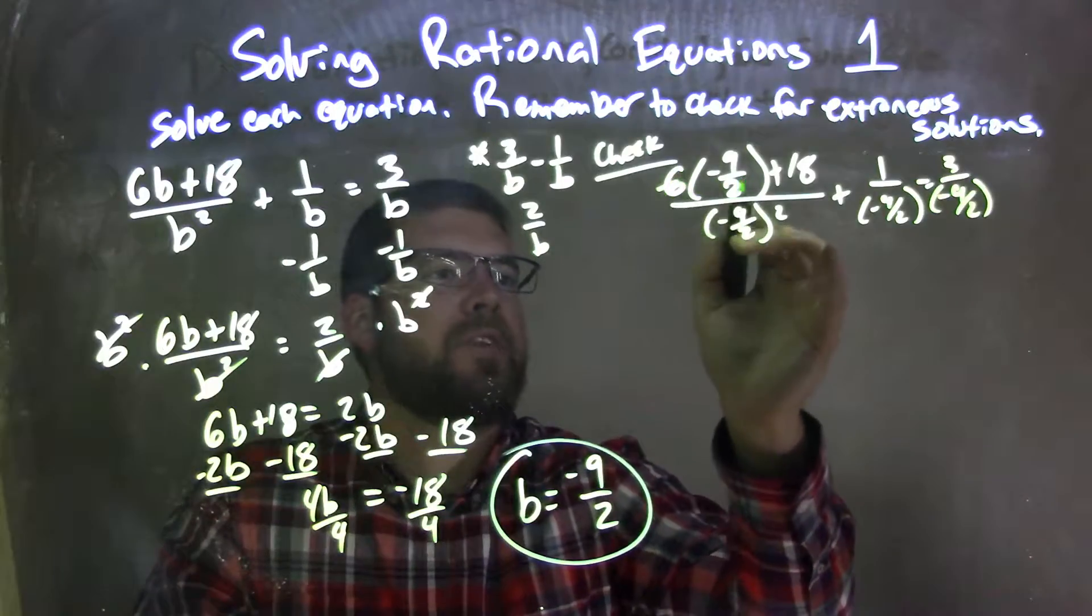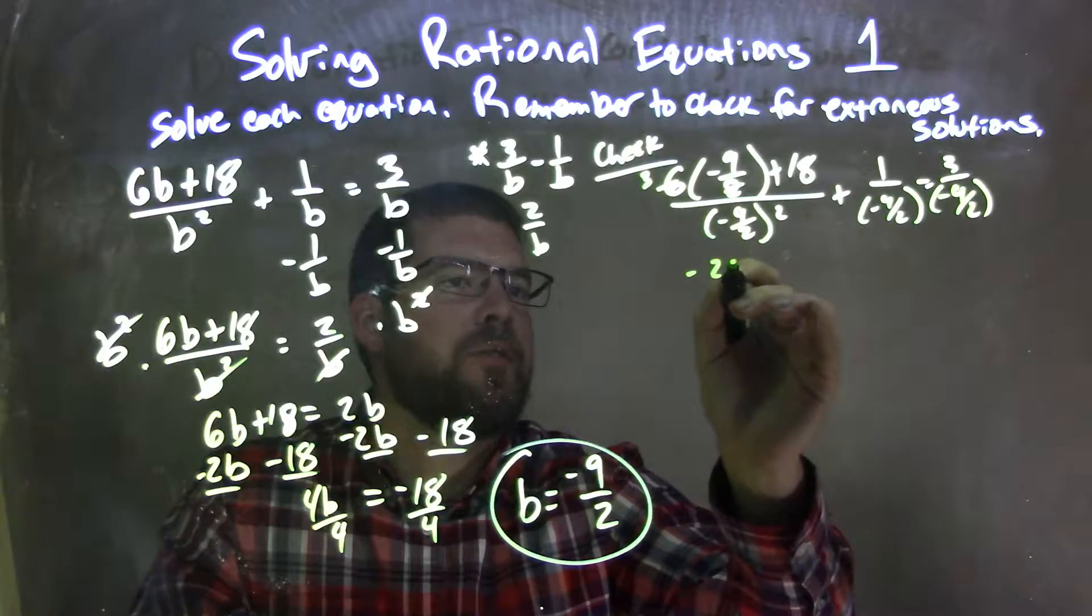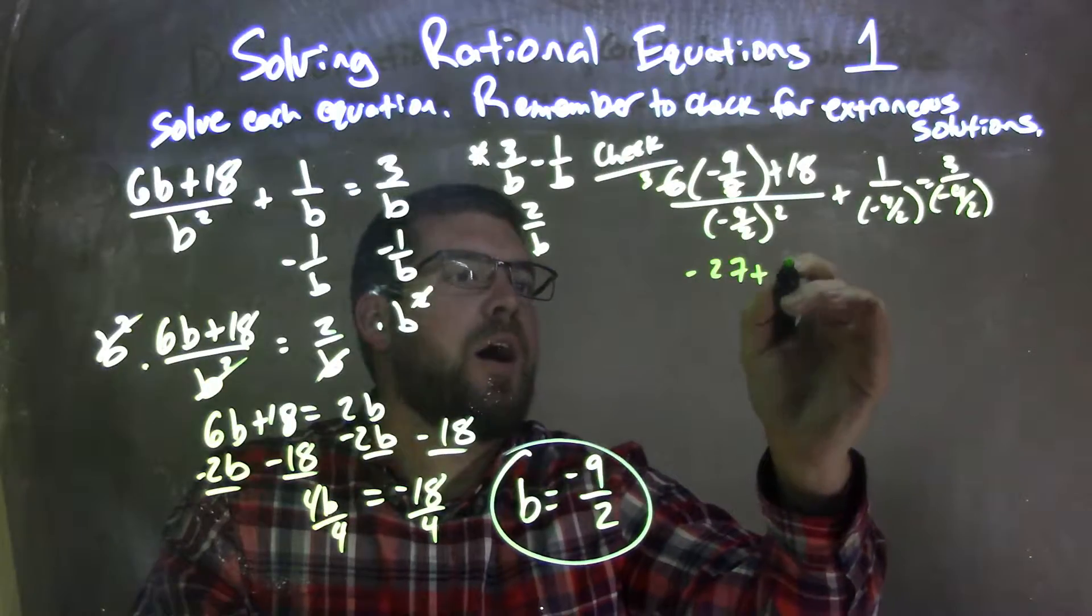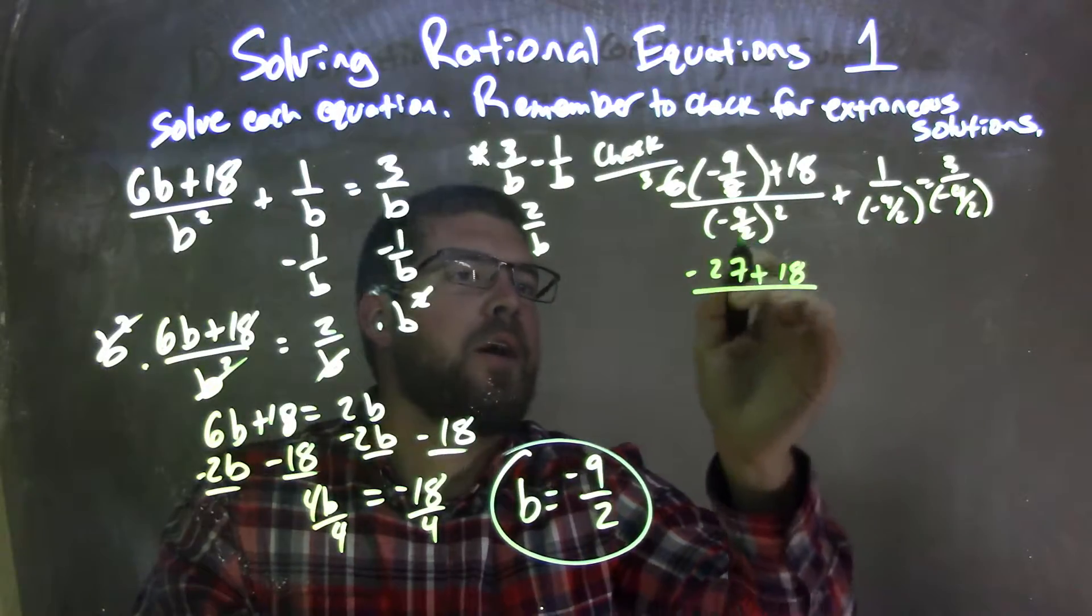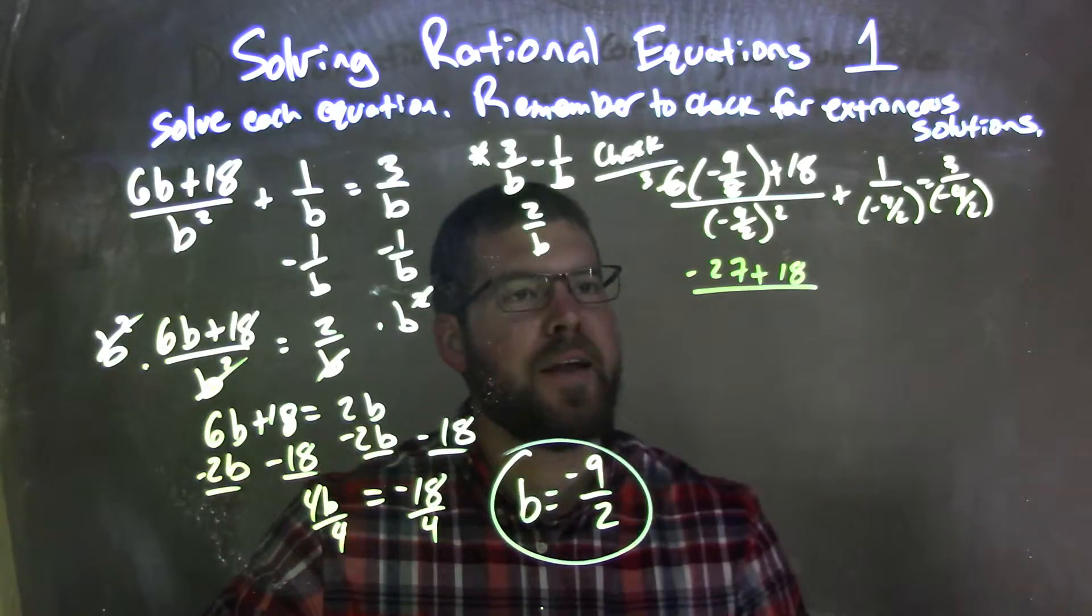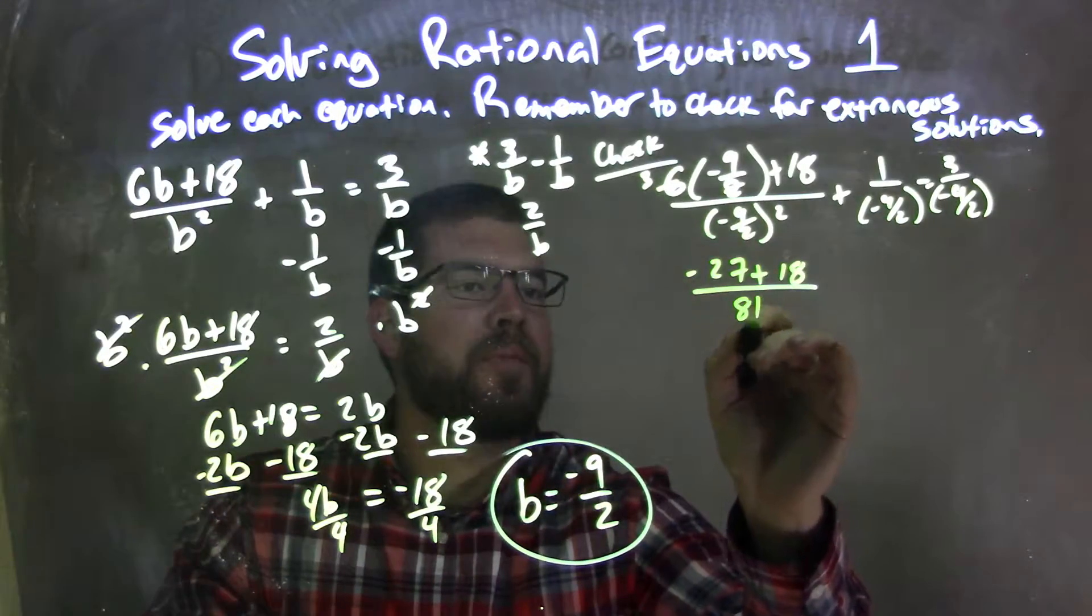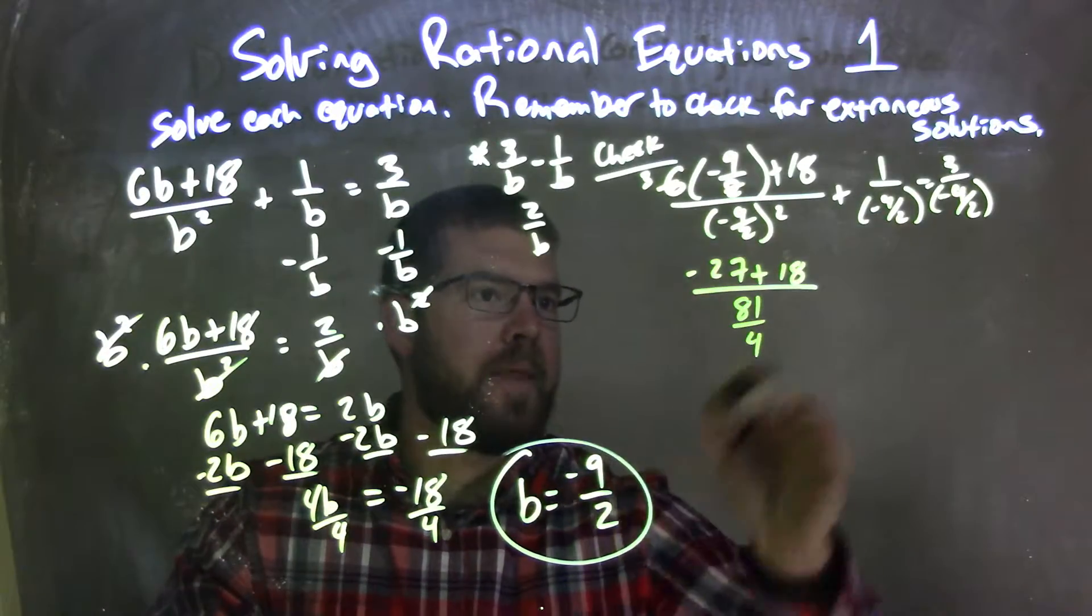And 3 times negative 9 is negative 27. So we have negative 27 plus 18 over negative 9 squared. Negative 9 halves times negative 9 halves, I'm squaring that, so we have actually 81 over 4. And that will fraction it.